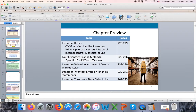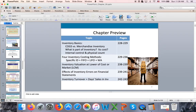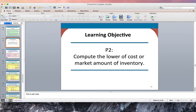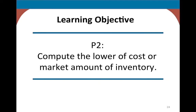So let me go to LCM. LCM — Lower of Cost or Market — sounds quite fancy, but it's very easy to use. With the first part of the chapter, I told you that GAAP allows companies to choose any of the four methods of cost flow. With LCM, there is no choice. GAAP requires every company to report inventory at LCM — Lower of Cost or Market.